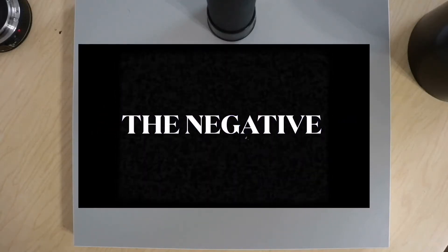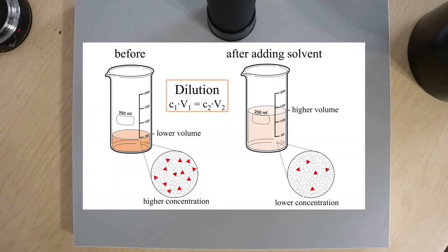Hello everyone and welcome back to The Negative. In this video we'll be learning how to calculate dilutions for film development. For this video we'll be using Rodinal as our example.